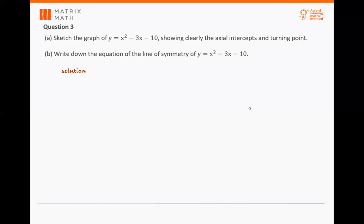Question 7 asks you to sketch the graph of y equals x squared minus 3x minus 10, and they want you to show clearly the axial intercepts and turning point. So you have this equation given, which is y equals x squared minus 3x minus 10.